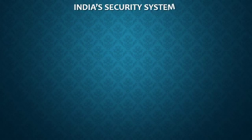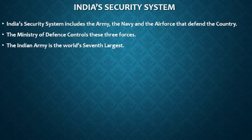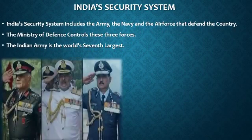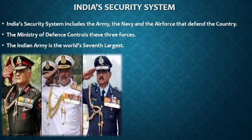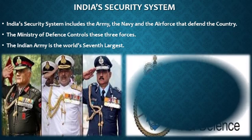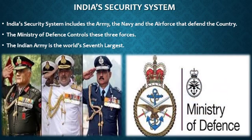India's security system includes the Army, the Navy, and the Air Force — the three factors that defend the country. The responsibility of protecting the geographical boundaries is on the Army. The Navy protects the coastline, whereas the Air Force is in charge of protecting India's airspace. The Ministry of Defence controls all three forces.